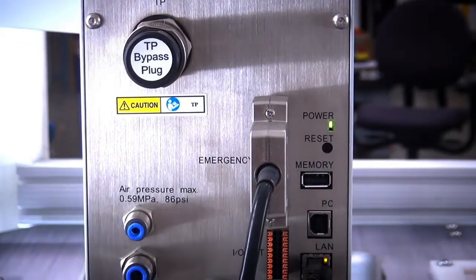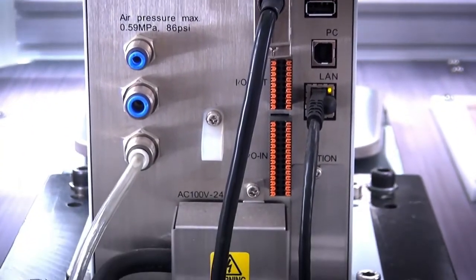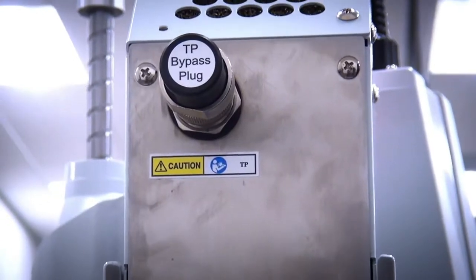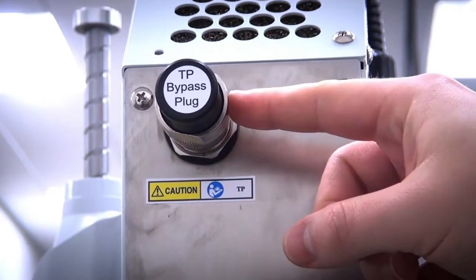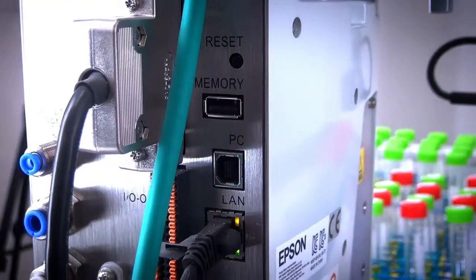The robot controller comes with a variety of connectors on the back including a teach pendant connector so that you can utilize Epson's teach pendants to program or move your robot. You have an emergency connector for wiring your safety circuit. You have user inputs and outputs for 24 volt signals. You get a total of 18 inputs and 12 outputs. You can wire them for PNP or NPN wiring style.